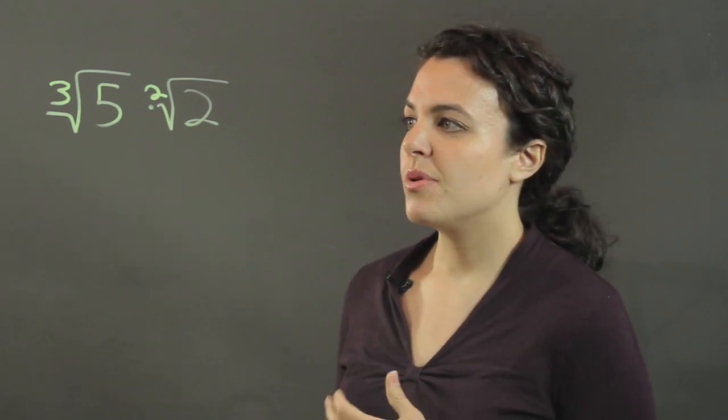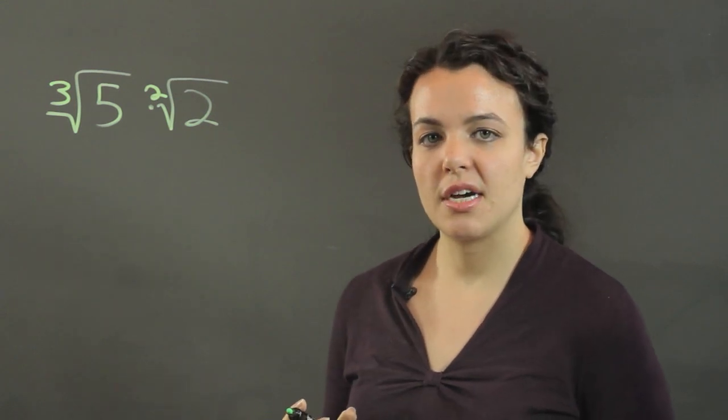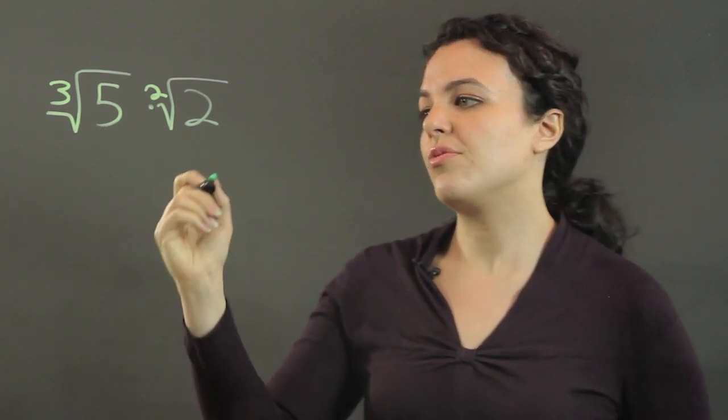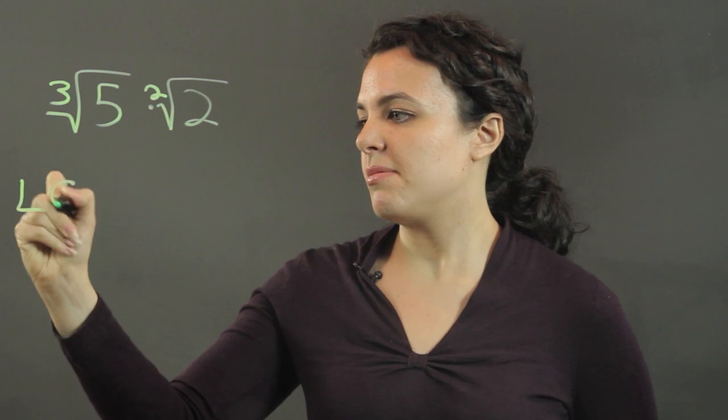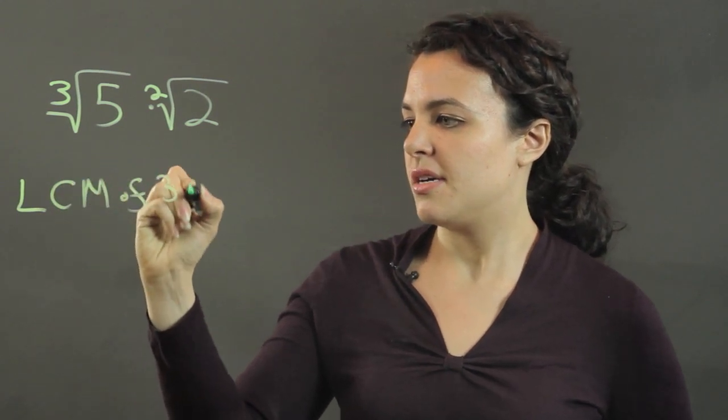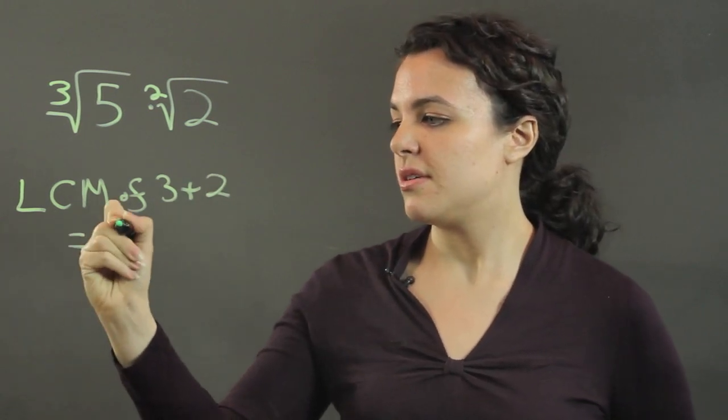So what we want to do is ask ourselves what is the least common multiple of the indices that we have, 3 and 2. So we're looking for the least common multiple of 3 and 2, which is 6.